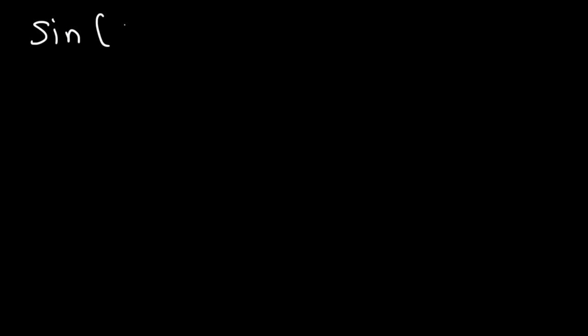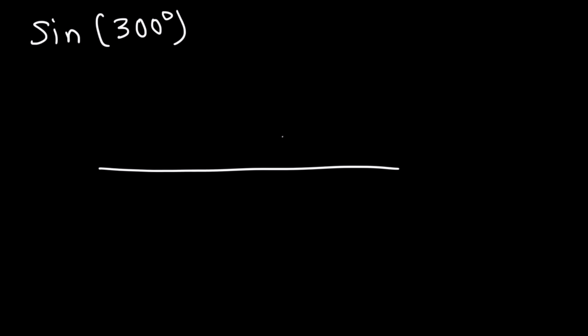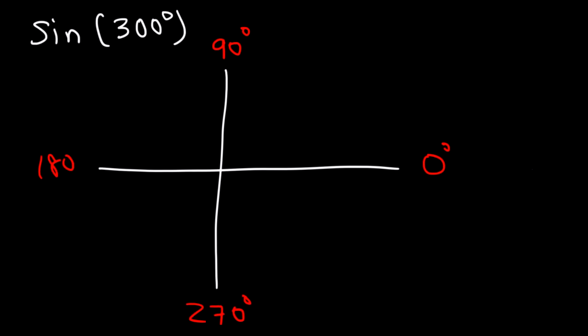In this lesson we're going to focus on using reference angles to evaluate trigonometric functions. What is the exact value of sine of 300 degrees? First, let's plot 300 — it's in quadrant 4. Recall that 0 degrees, 90, 180, 270, and 360 are the quadrant boundaries, so 300 is closer to 360.